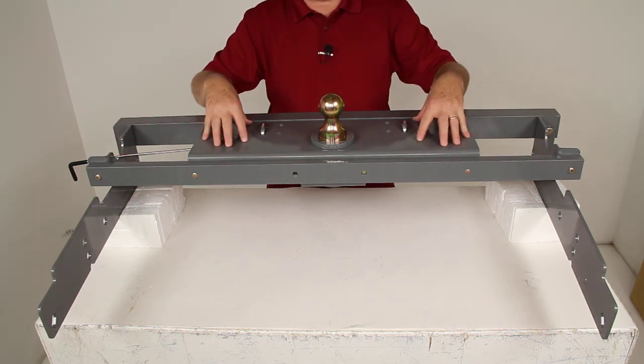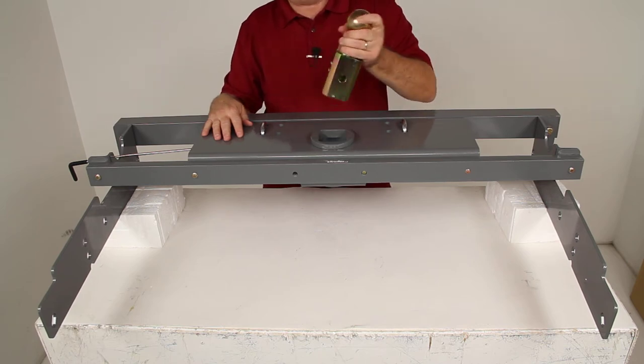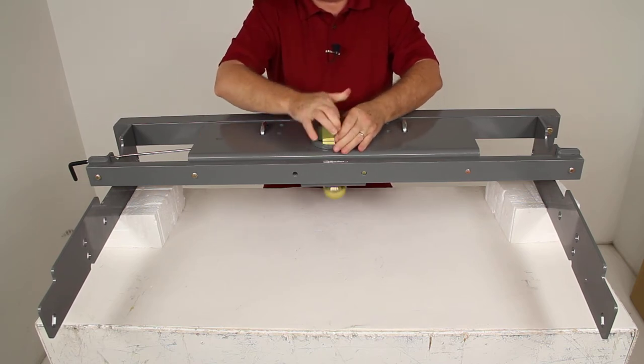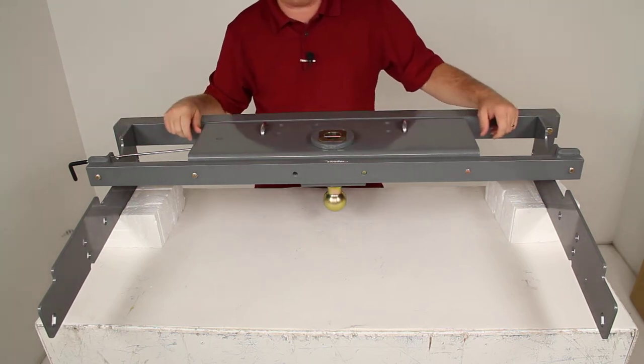This heavy-duty underbed hitch will let you tow your gooseneck trailer. If you pull the ball out and flip it upside down, you can drop it back into the hitch for storage. It'll give you complete truck bed access when you're not towing.